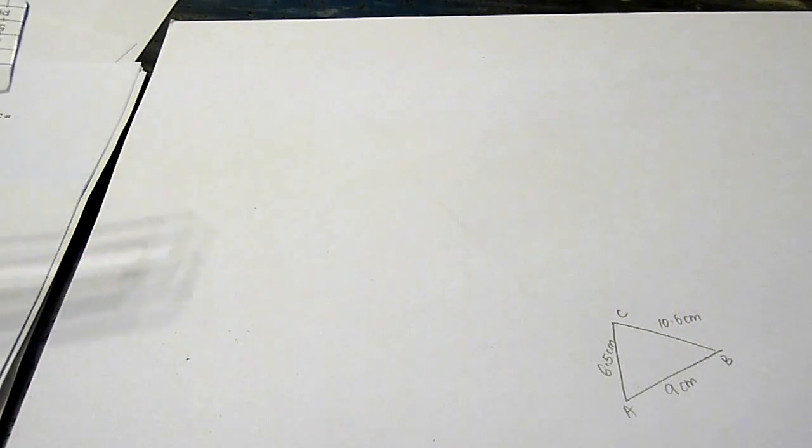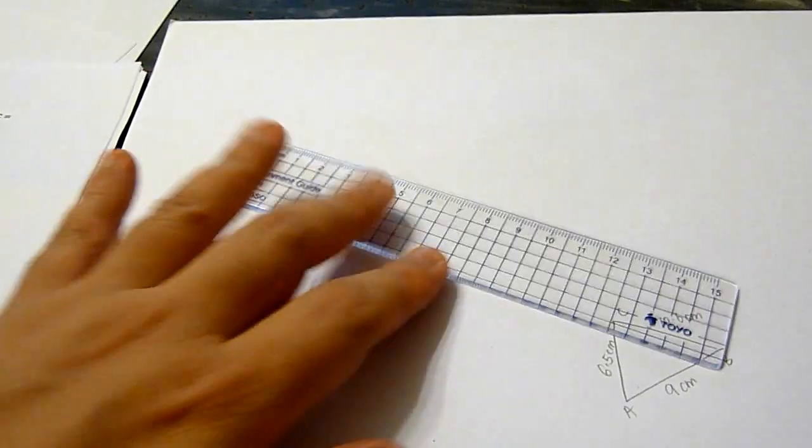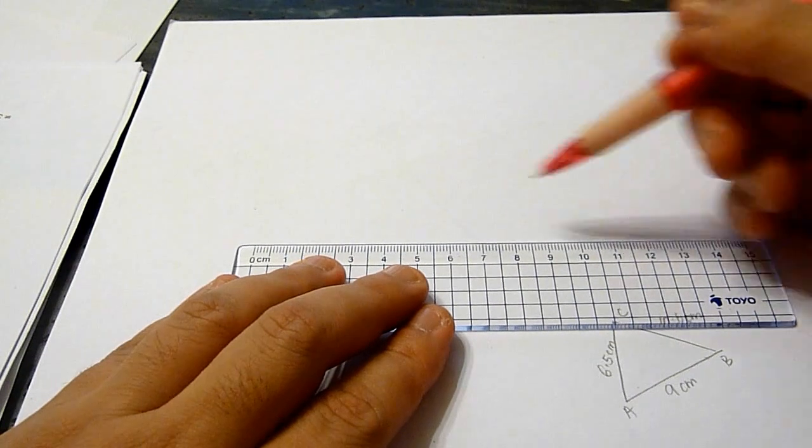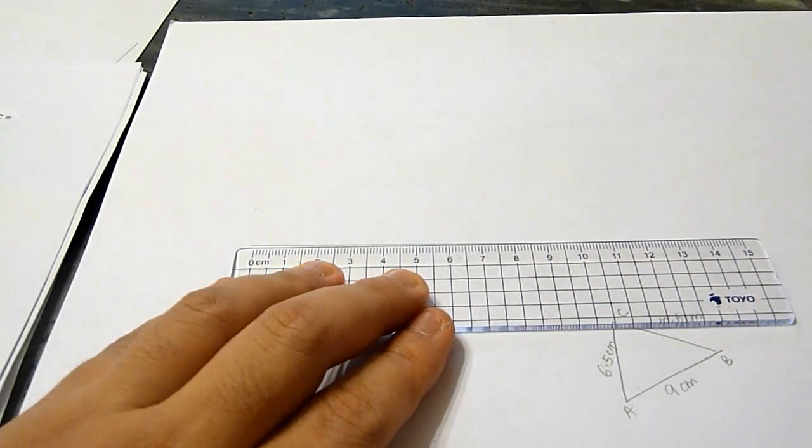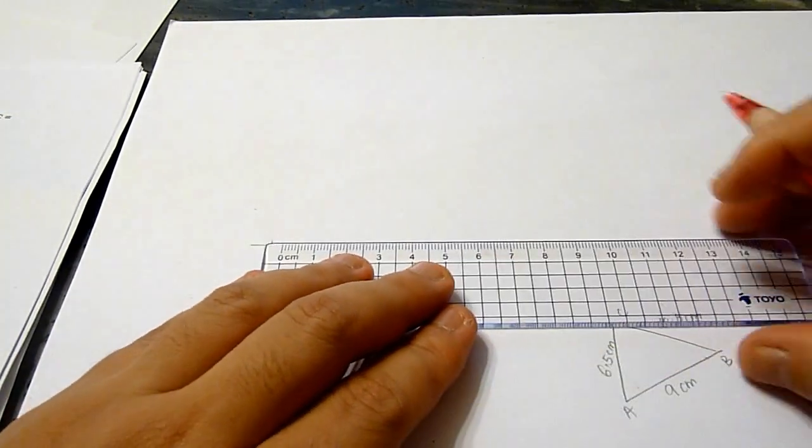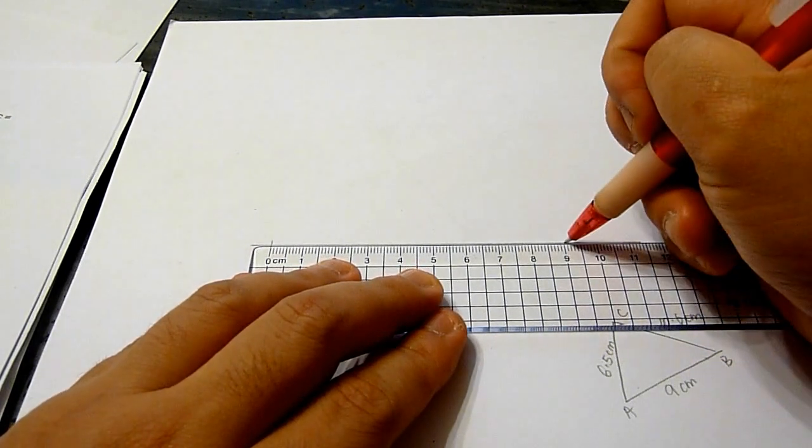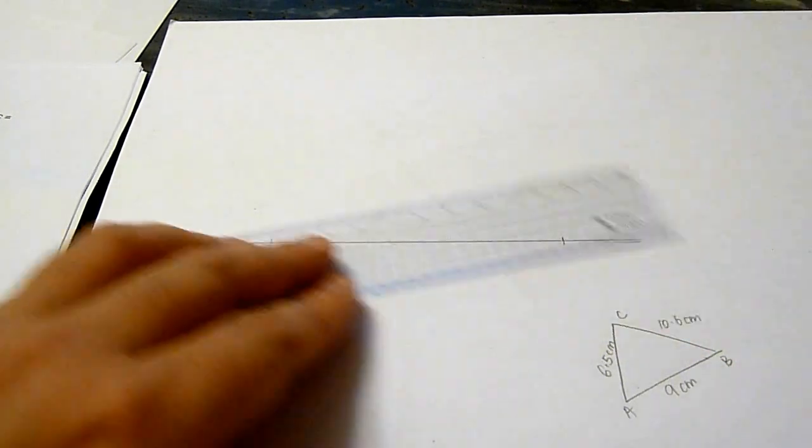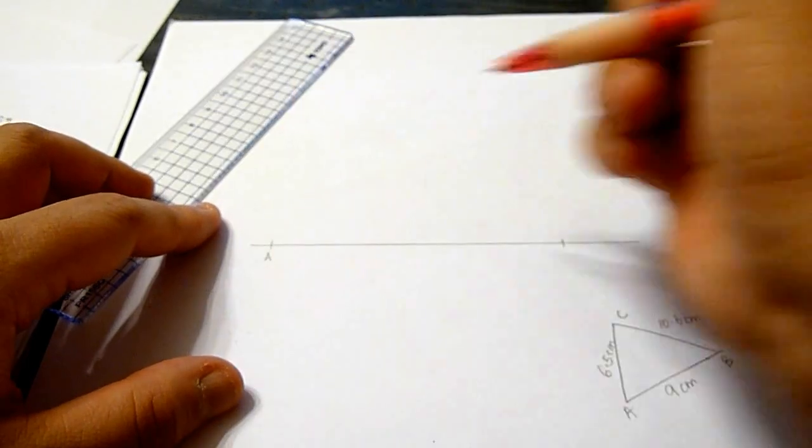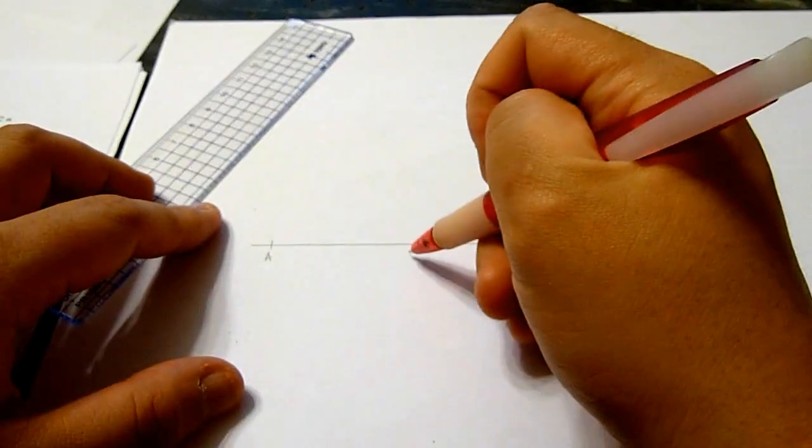Now we shall draw the line AB, mark the two points, and put down the measurement.